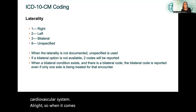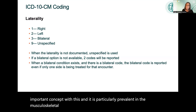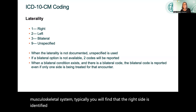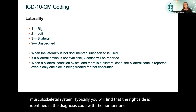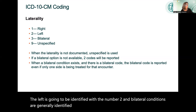When it comes to ICD-10-CM coding, laterality is an important concept, and it is particularly prevalent in the musculoskeletal system. Typically, the right side is identified in the diagnosis code with the number one, the left is identified with the number two, and bilateral conditions are generally identified with the number three.